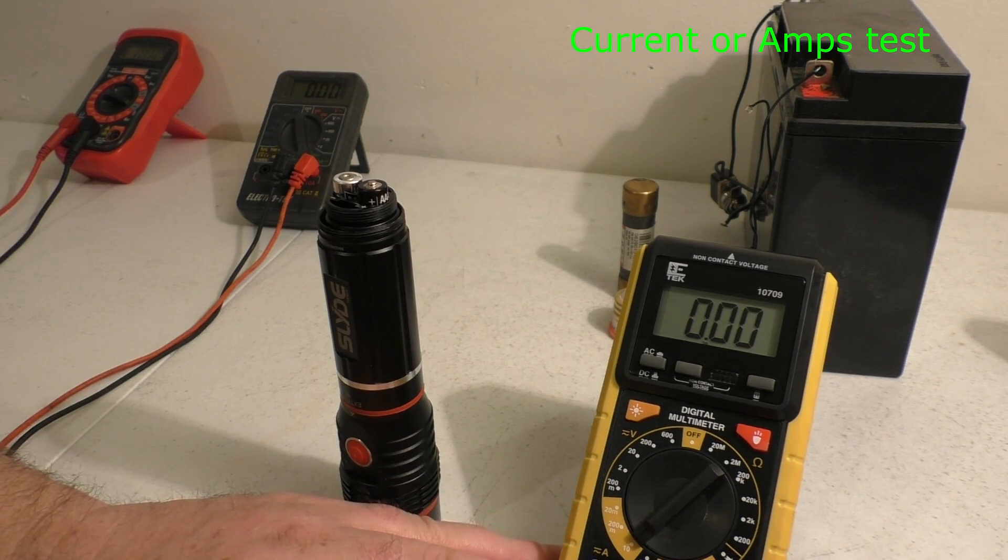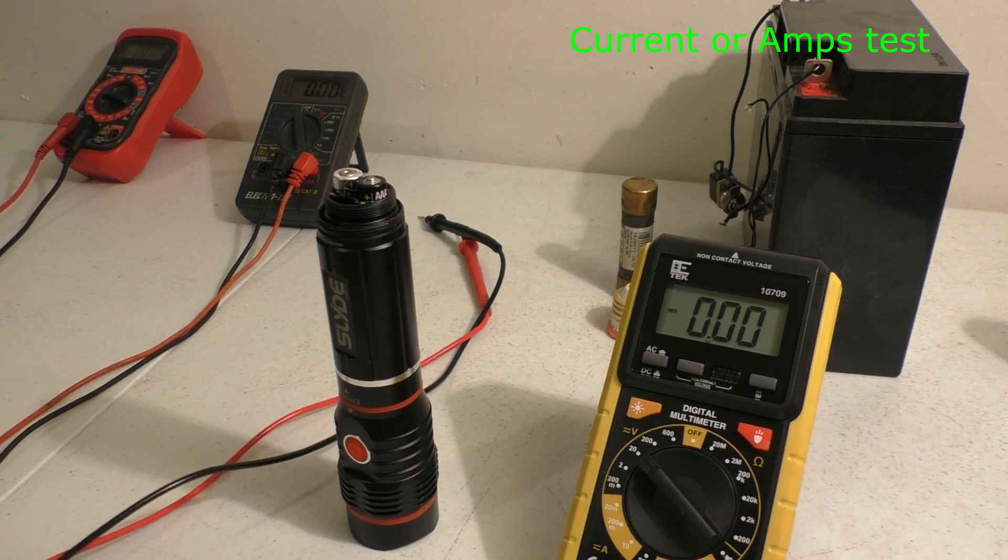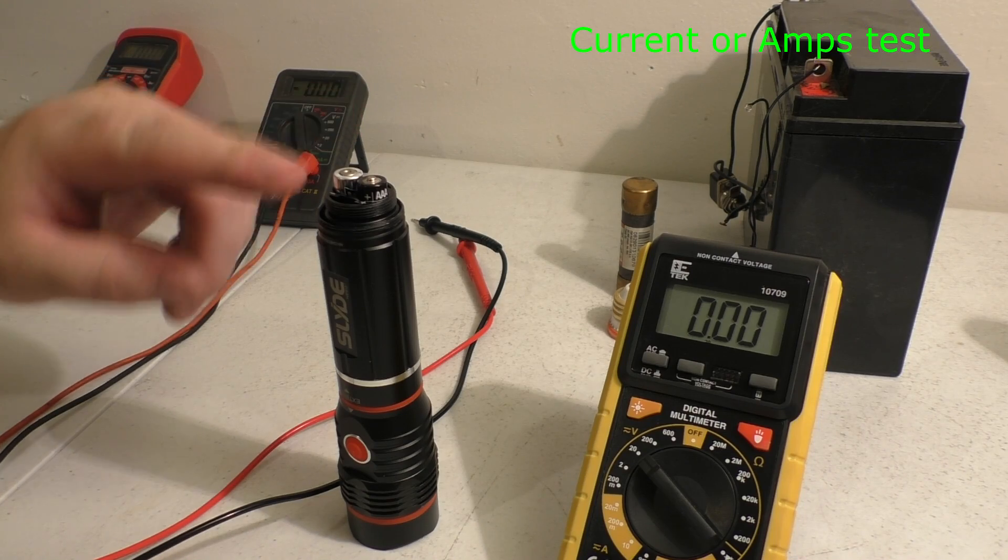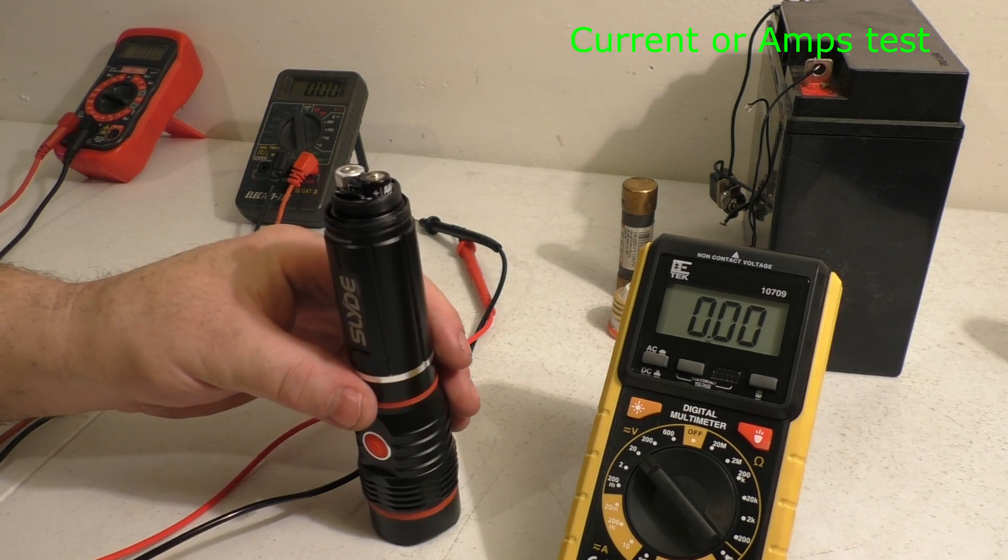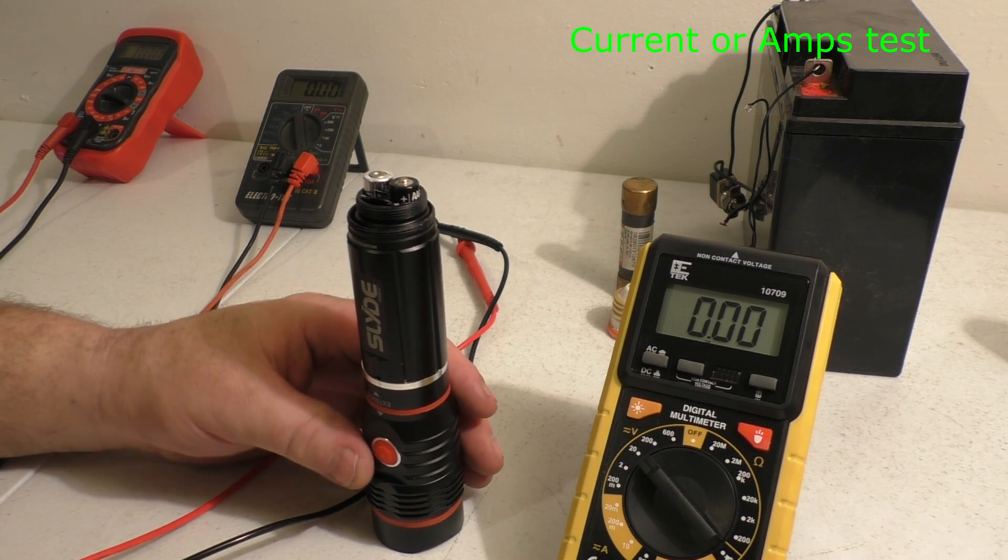If I were to switch over to volts, 5.25 volts times 0.8 amps equals around 4.2 watts. So you can determine how many watts a flashlight is by taking your voltage times your amperage, which will give you watts.